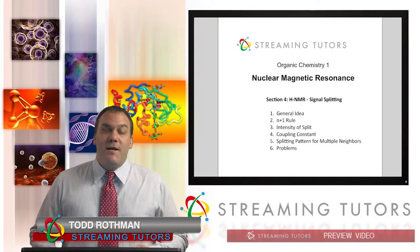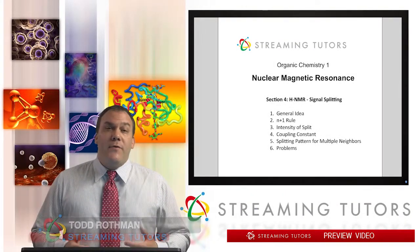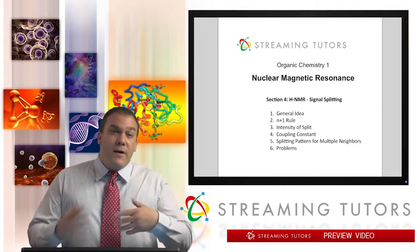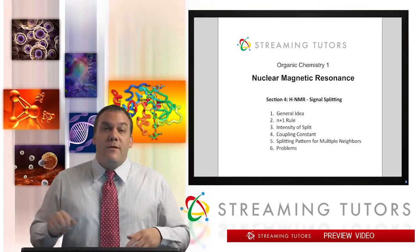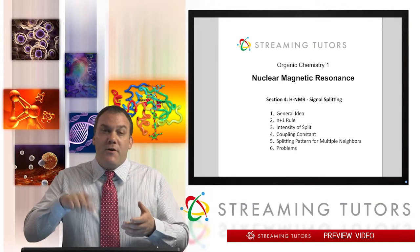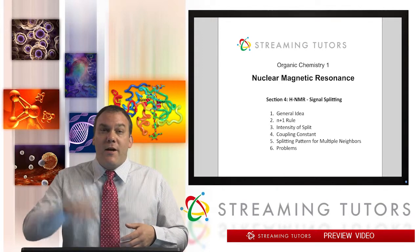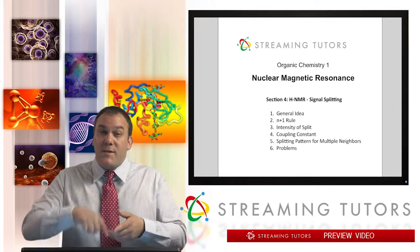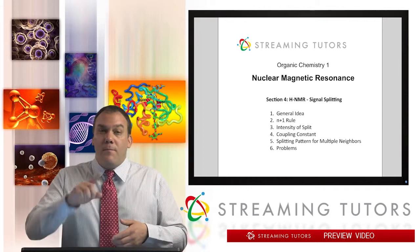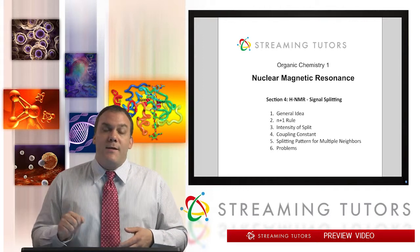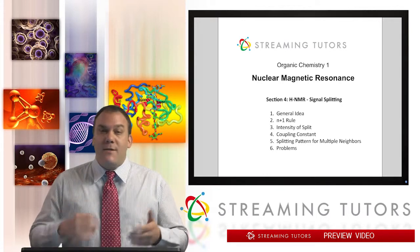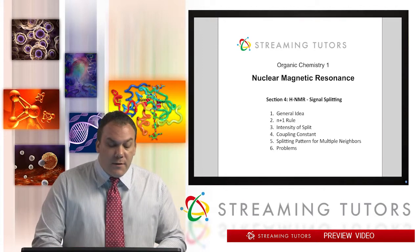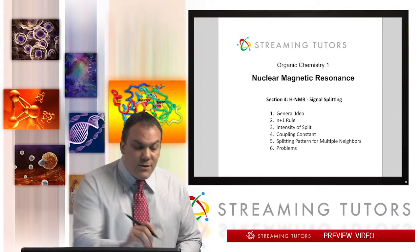Welcome back to organic chemistry. In this video we're going to learn about the multiplicity of a signal in an NMR chart — another way to say that is signal splitting. Sometimes the signals you read on a chart are not just a straight line up and down, but are actually broken up into several sub-lines. It's one signal but it's broken up into several spikes. We'll learn why that happens, how it happens, and the different patterns related to this.